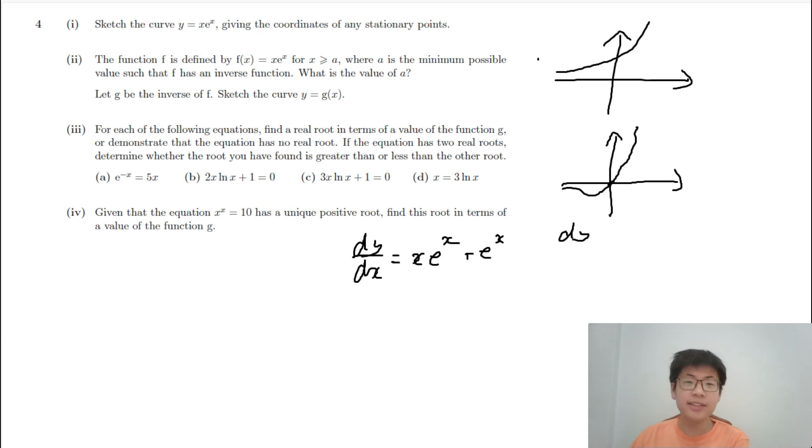So to find the stationary point, we have to find dy/dx = 0. Then e^x(x+1) = 0 because we can factorize this expression. Now x+1 = 0, x = -1. And e^x can never equal 0. So this means y = -e^(-1). So the stationary point is at (-1, -e^(-1)), and it's a minimum.